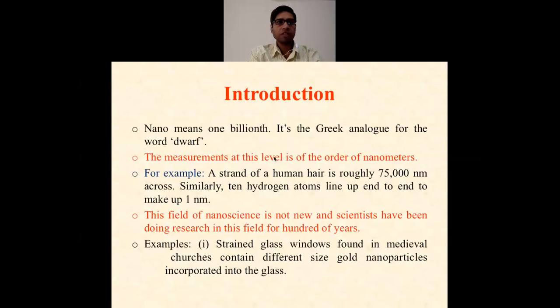Basically, nano means one billionth, and it's the Greek analogue for the word dwarf, which means small. The measurements at this level are of the order of nanometers. For example, a strand of human hair is roughly 75,000 nanometers across. Similarly, ten hydrogen atoms line up end to end to make up one nanometer.